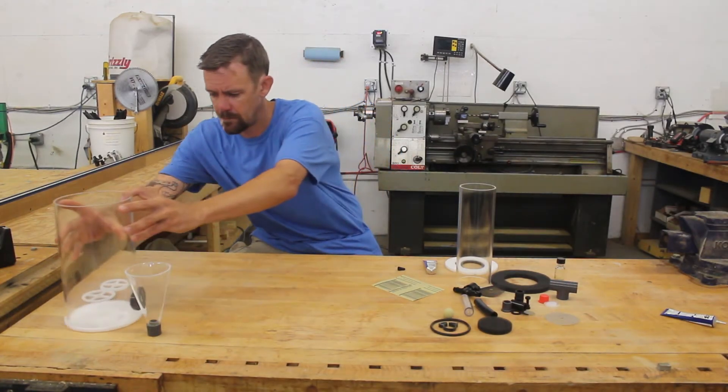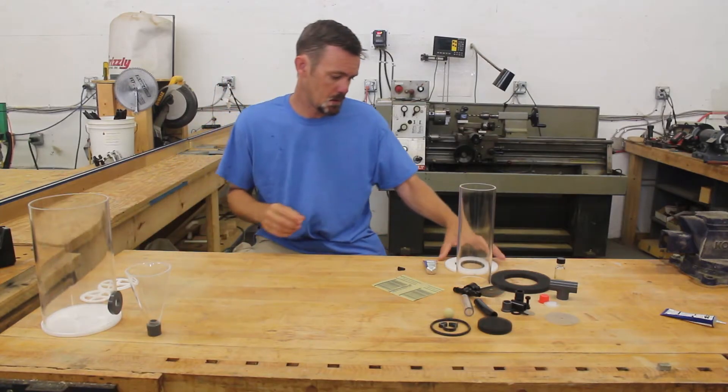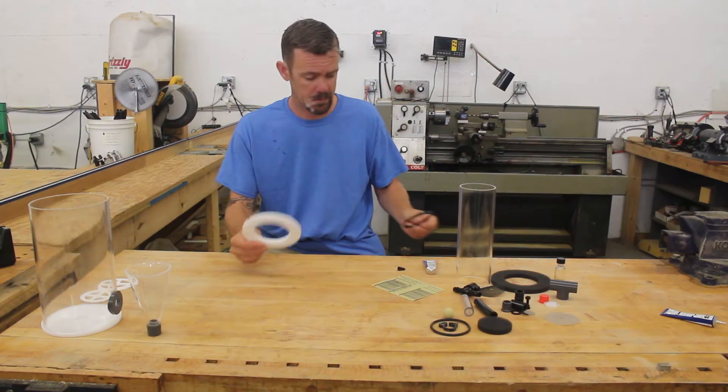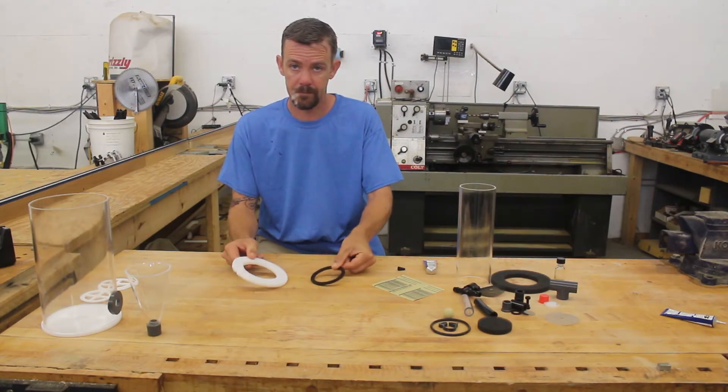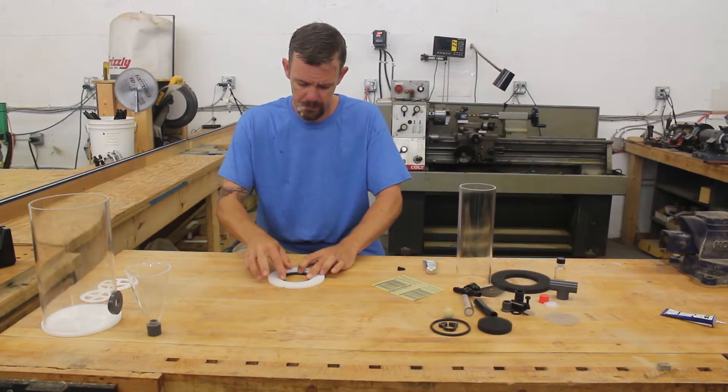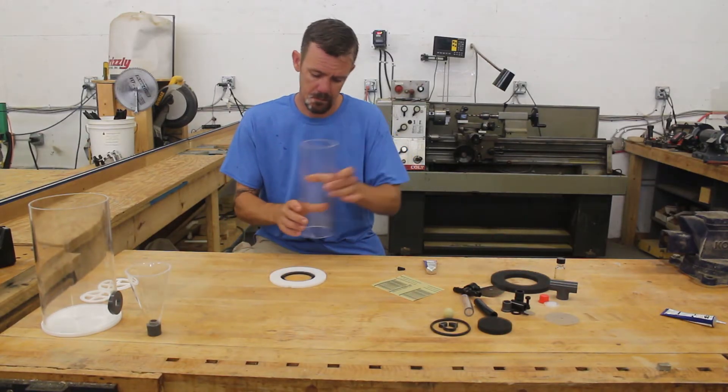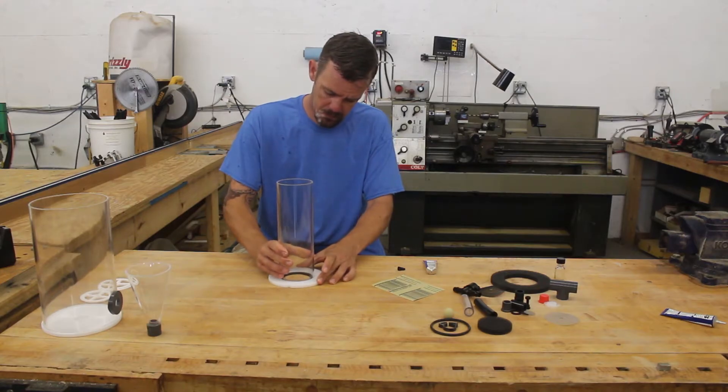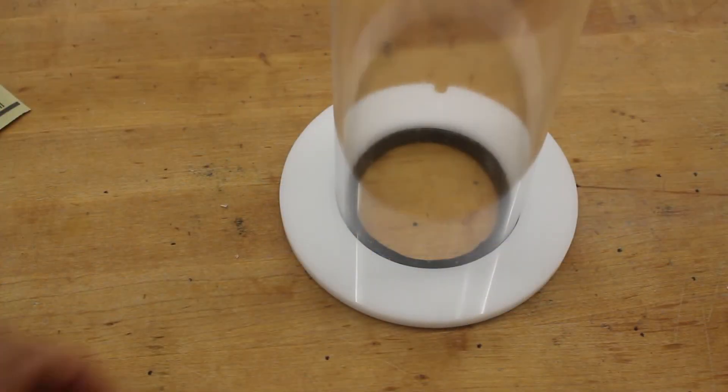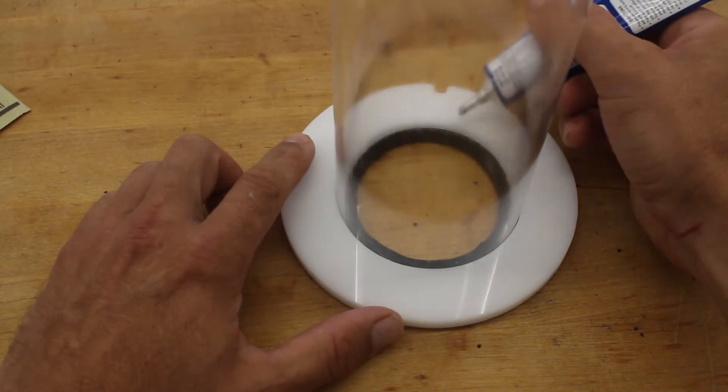Now, while we let that dry, we can start the inner chamber assembly. For this, we are going to first glue the chamber halfway down the spyglass flange. And to do this, we are going to use the 3/16 inch spacer jig. Make sure the flange and jig are both perfectly flat on the table, and then place your chamber on the jig and push down to make sure it is flat as well.